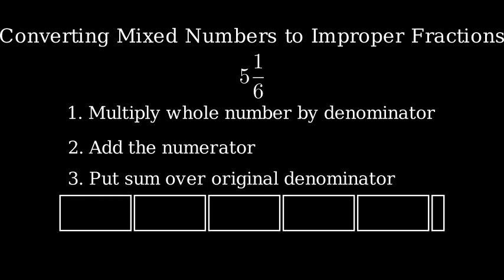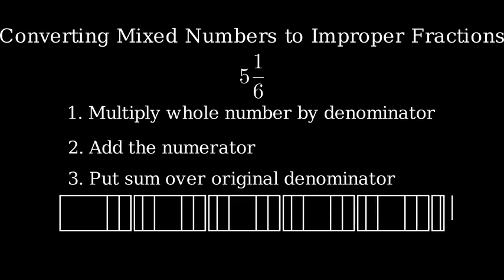Let's visualize this. Here we have 5 whole units plus 1 sixth of a unit. Each whole unit can be divided into 6 equal parts. When we divide each whole unit into 6, we can count that we have 30 sixths plus 1 more sixth, giving us 31 sixths total.